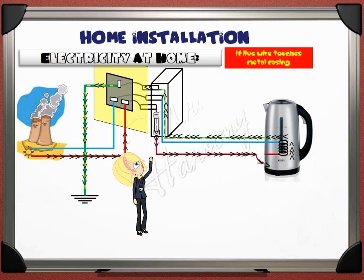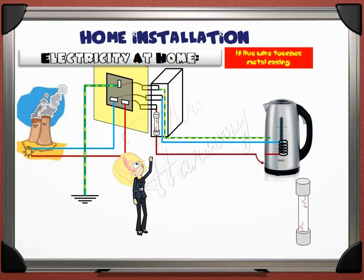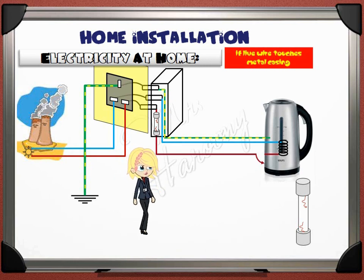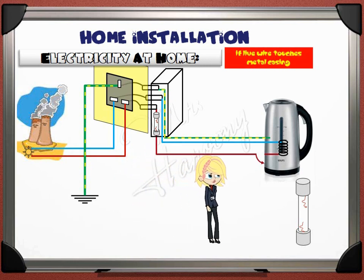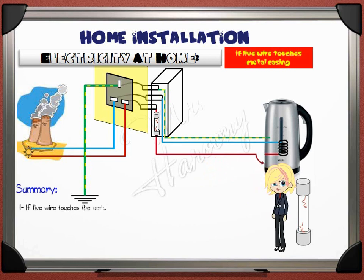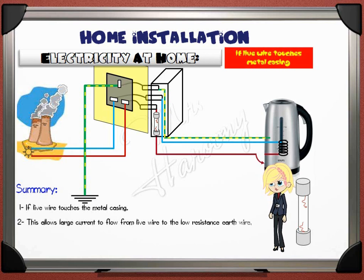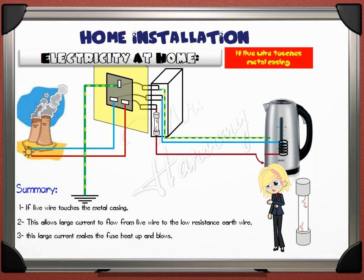At this point comes an important role of the fuse. Since the earth wire has a low resistance, this makes the current coming from the live wire increase. This increase in current, due to the low resistance of the earth wire, causes the fuse to heat up and blow, cutting the current from the kettle. In summary: if the live wire touches the metal casing, this allows large current to flow from the live wire to the low-resistance earth wire, the large current makes the fuse heat up and blow, the circuit cuts and the current stops.